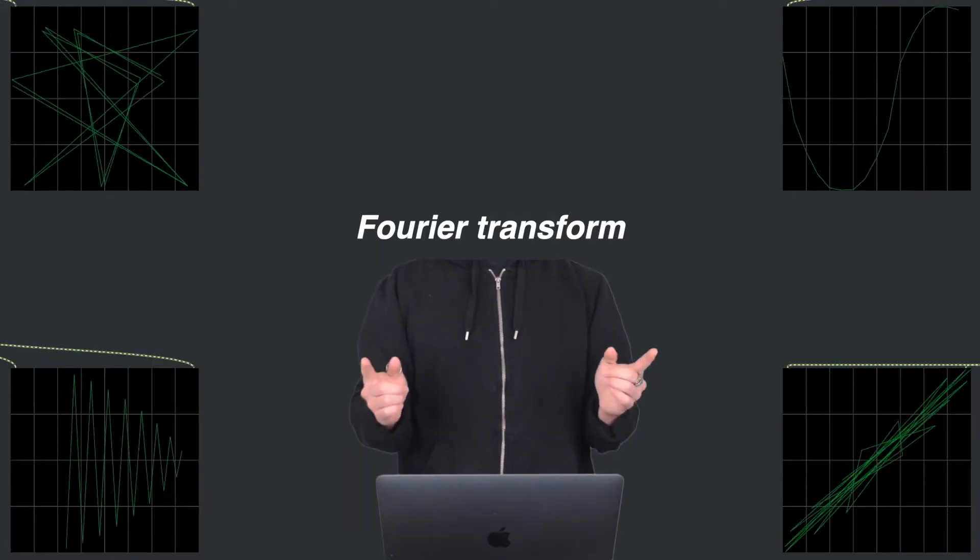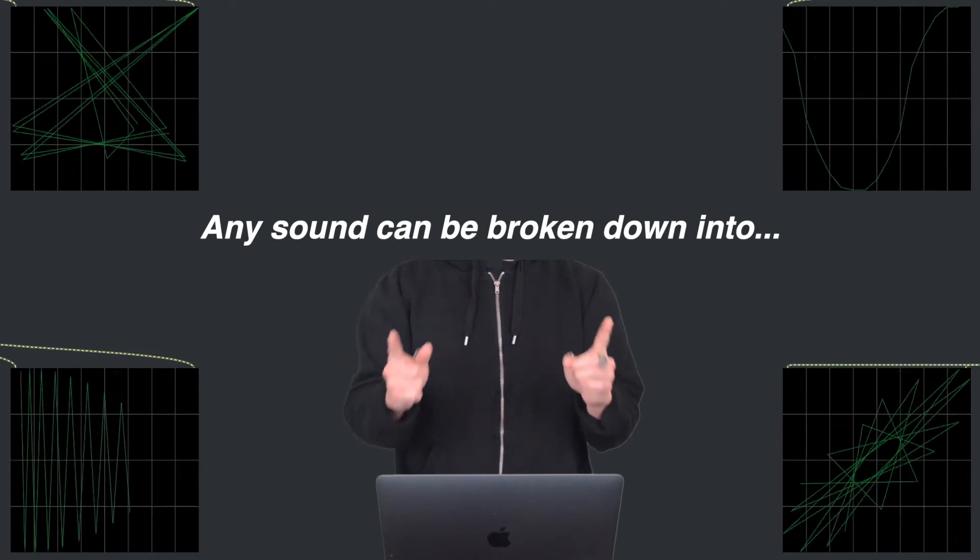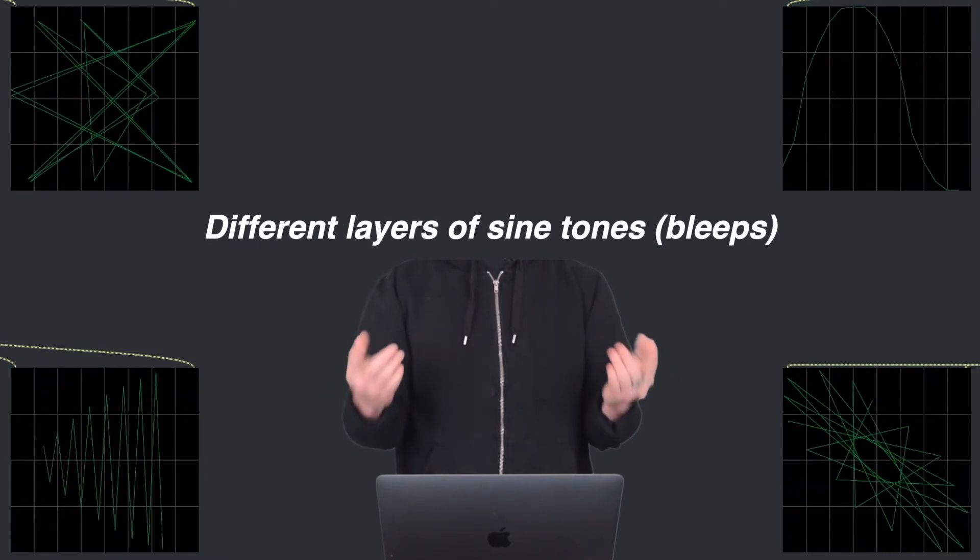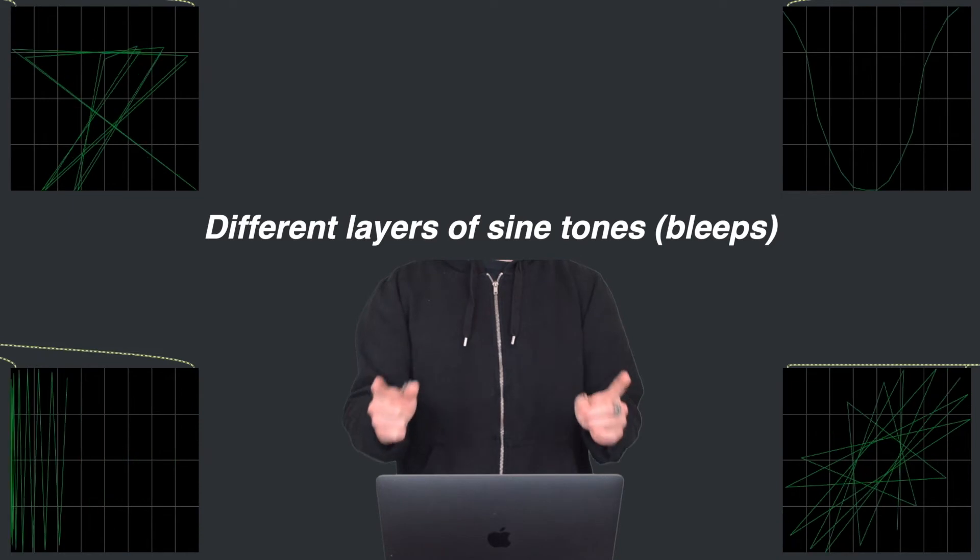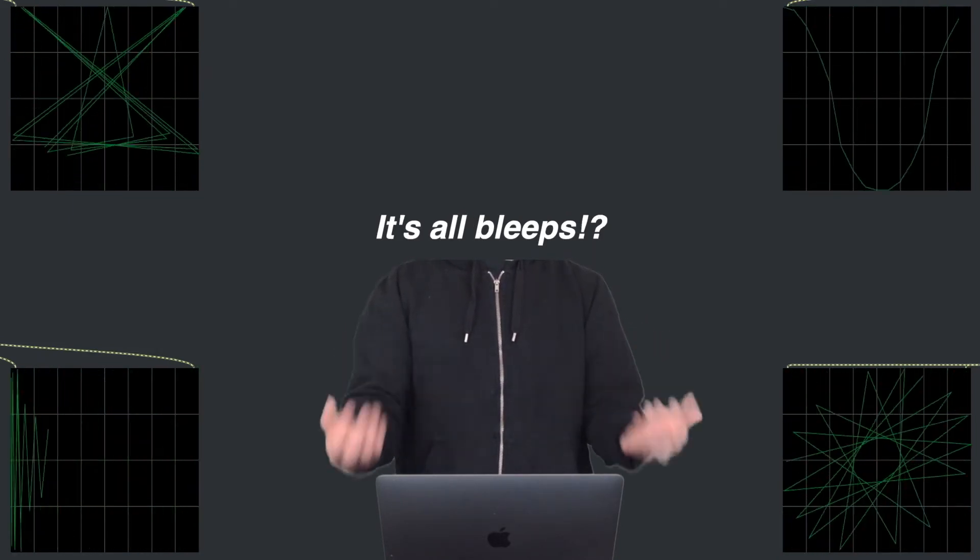If we do what is called a Fourier transform, any sounds in nature, including musical instrument sounds, can be broken down into layers of different sine tones. Everything we know and love is made out of bleeps.